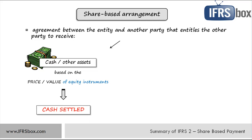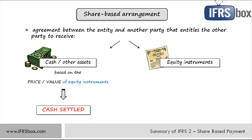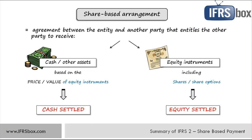The other party or the supplier can also be paid by equity instruments of the entity, including shares or share options. This is a common way to remunerate some employees of big companies — they receive share options in return for their work for the company. These transactions are called equity-settled. It is very important to determine whether we are dealing with a cash-settled or equity-settled transaction because the accounting treatment depends on it. There could also be some vesting conditions — service or performance conditions that the other party must fulfill before being entitled to share-based payment.